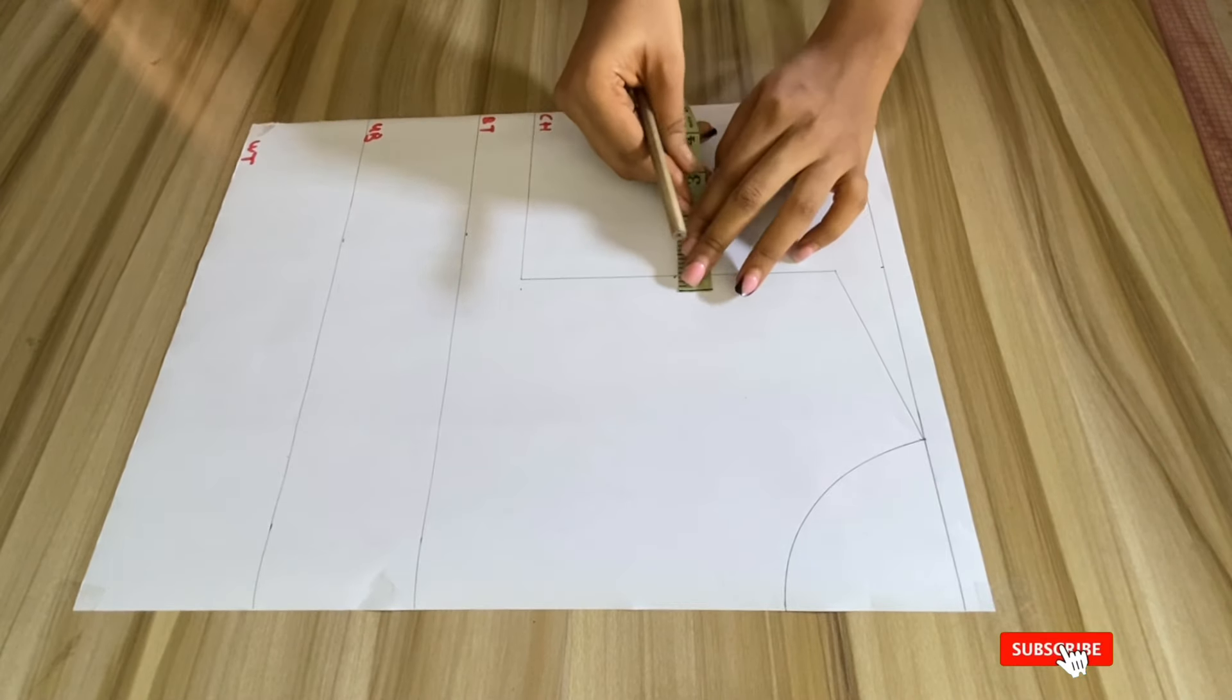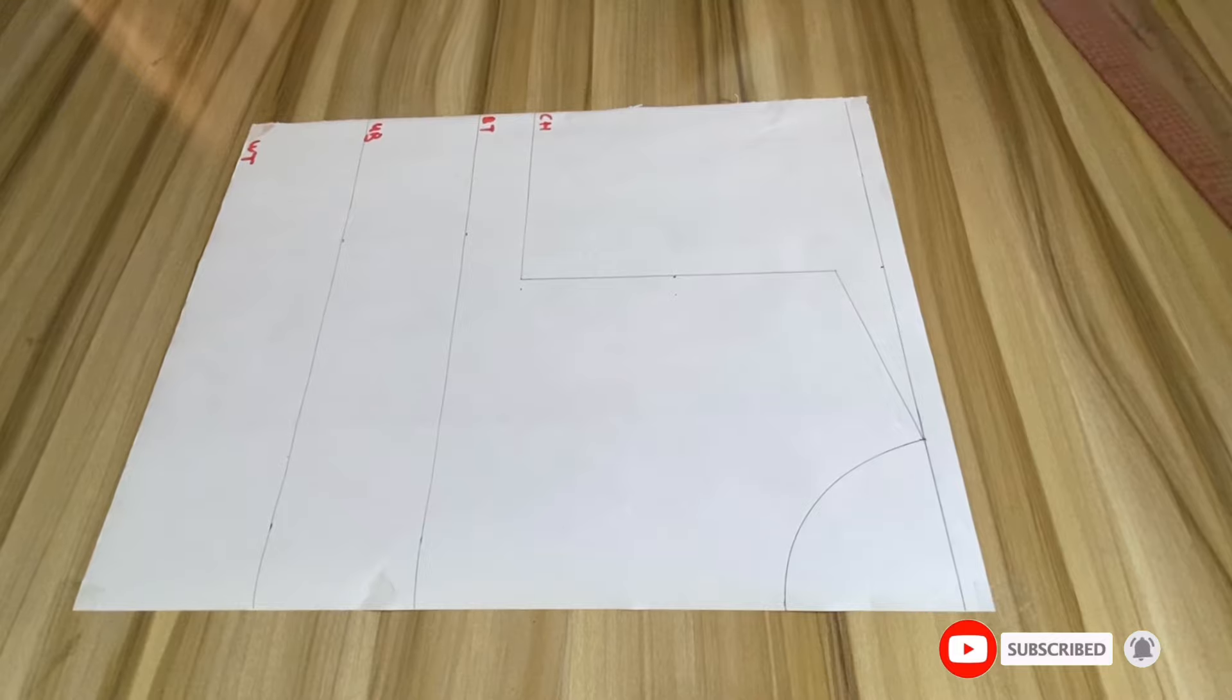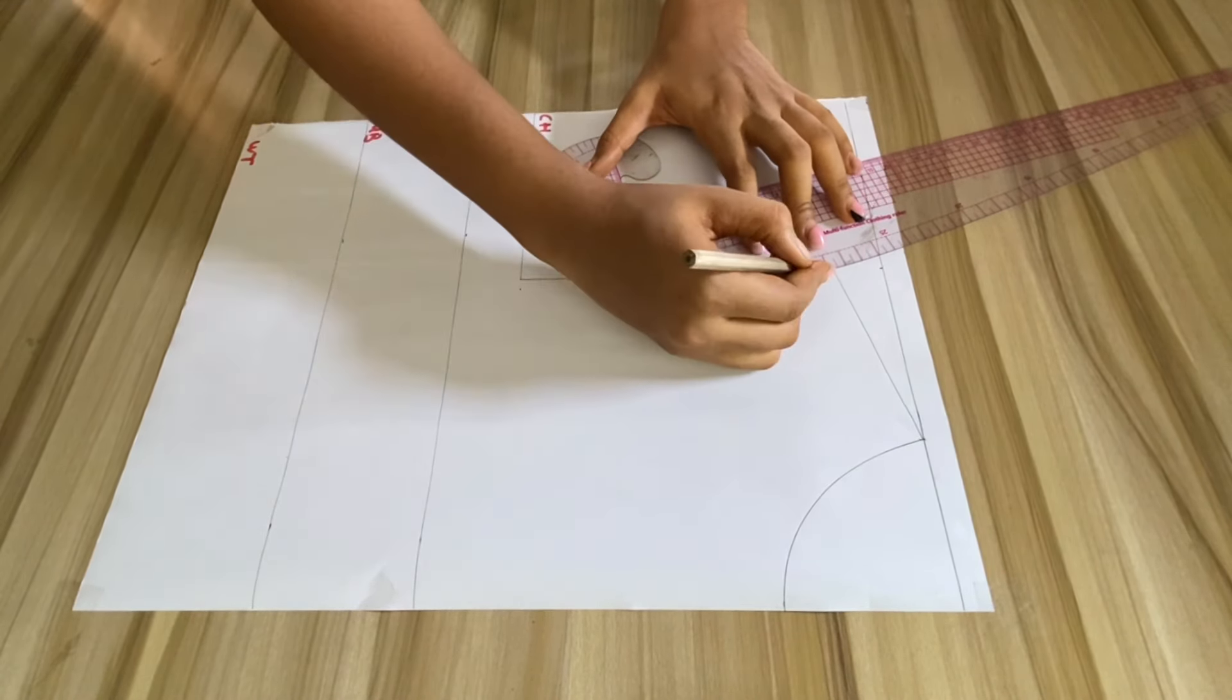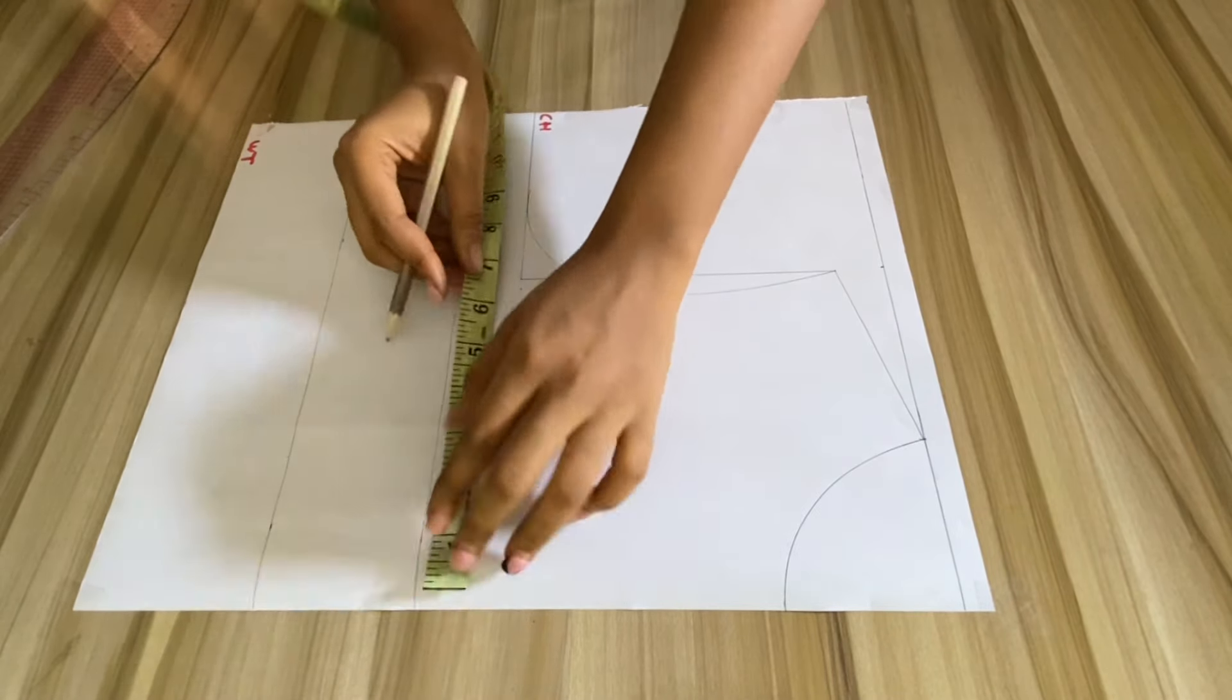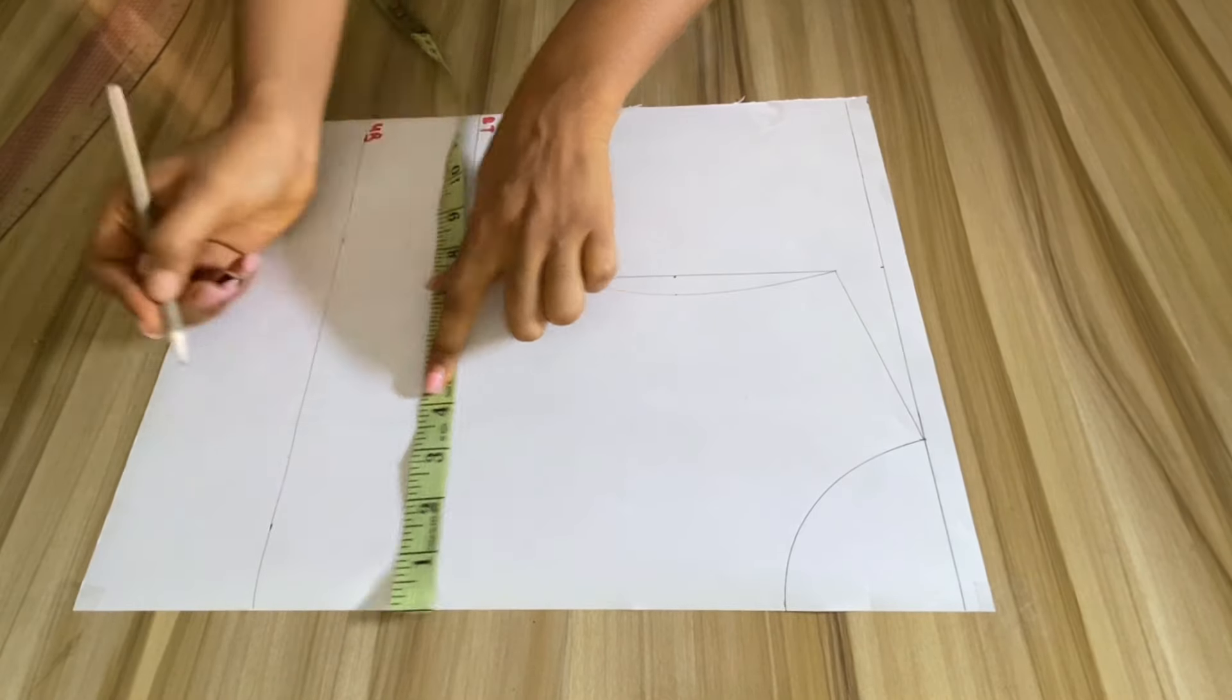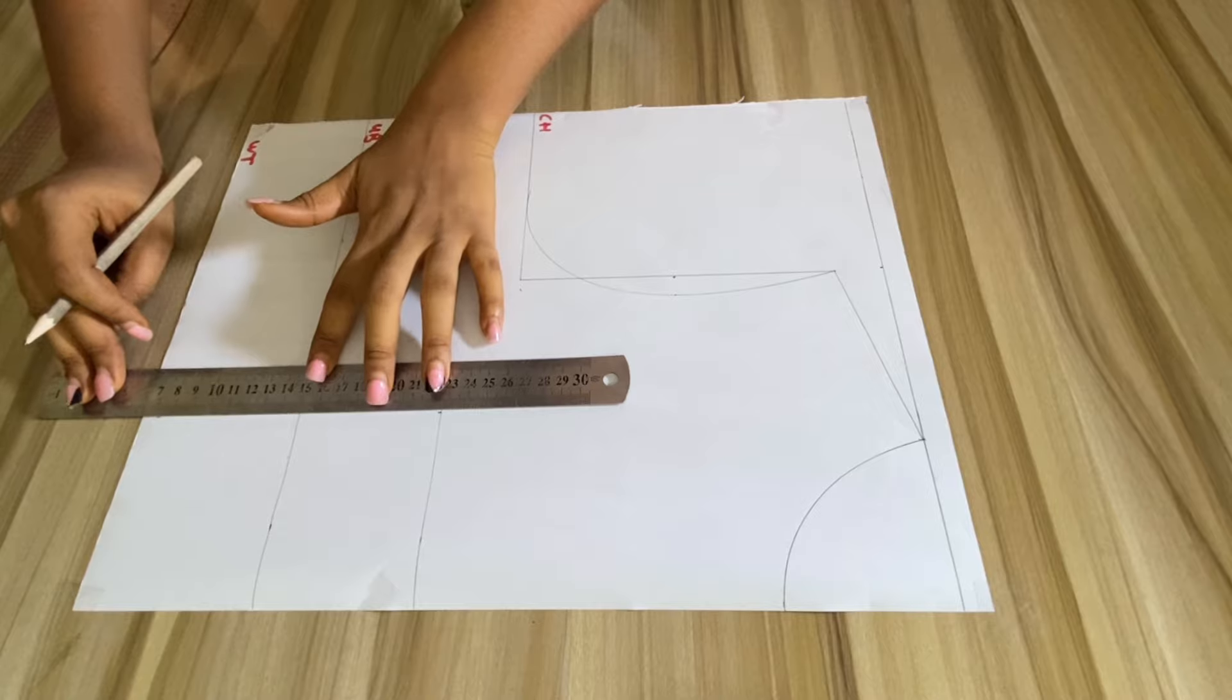Once that is done, I'll be going in by half inch, and I'm going to use the curve ruler to connect the point to the armhole line. At the first point, I'll just be marking my bust span, which is three and three quarter inches, and I'm just going to mark that at the waistline as well and rule out.